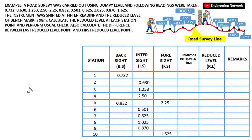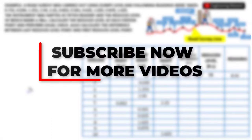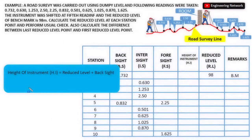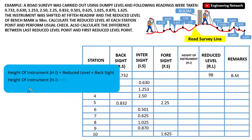The reduced level of the benchmark is 98 meters, and here I will write BM which stands for benchmark. The height of instrument or HI formula is: reduced level plus back sight. So 98 plus 0.732 gives a height of instrument at point 1 of 98.732 meters.